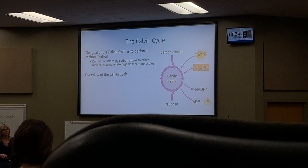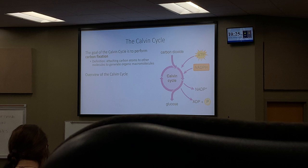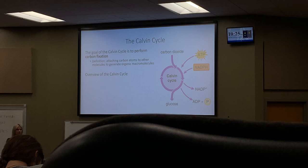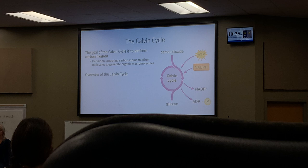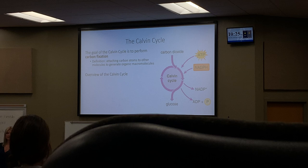Carbon fixation just means connecting carbons. The definition is attaching carbon atoms together to generate organic macromolecules — meaning a bunch of hydrocarbons strung together. In the overview of the Calvin cycle, carbon dioxide enters the cycle. In the overall reaction of photosynthesis you need water and energy, but you also need carbon dioxide. This is where carbon dioxide is a reactant — not in the light-dependent reactions. Carbon dioxide enters through the stomata.